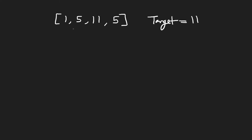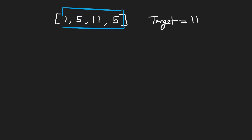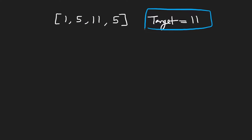So as with many problems, let's just try to figure out what the brute force solution would be. Basically let's start at the first element, and for every single element that we visit we have two choices — we can either include this in our sum or we can not include it in our sum. And we want to basically determine every single sum that we can make with any single subset from this given array, and we want to know does that sum ever equal 11? Because 11 is our target.